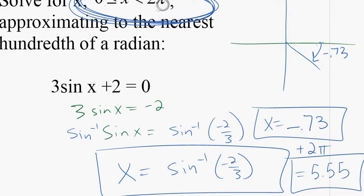No, because pi is 3.14. Yeah, to the negative. So this will give us the answer going the other way around. 5.55 radians.